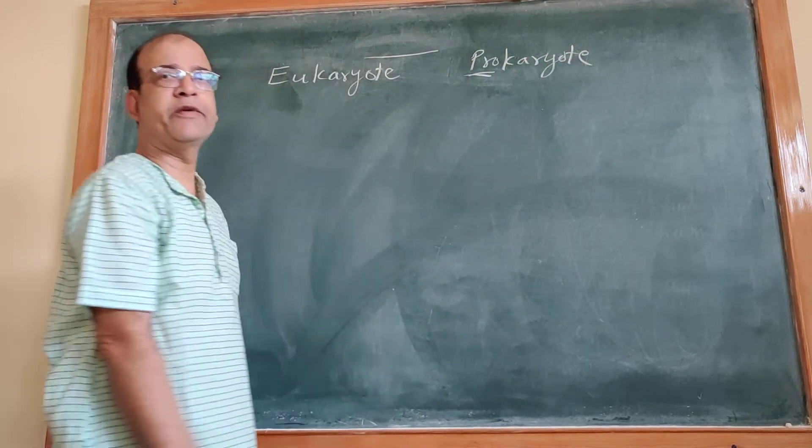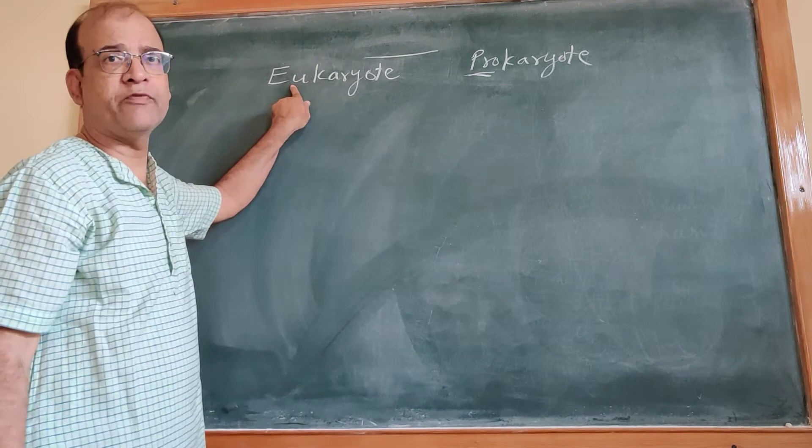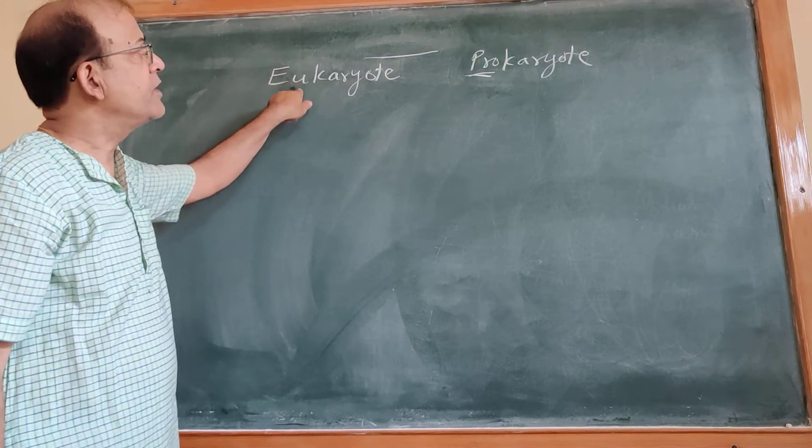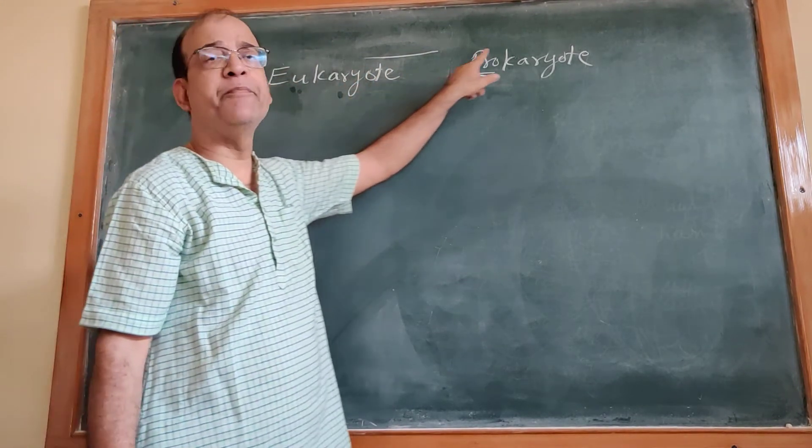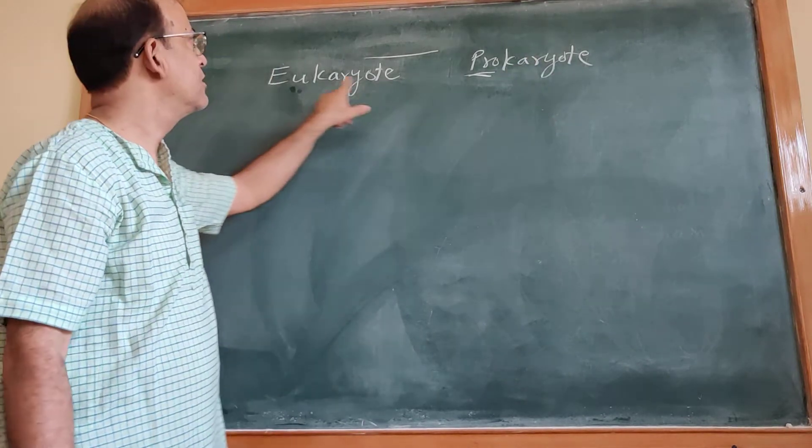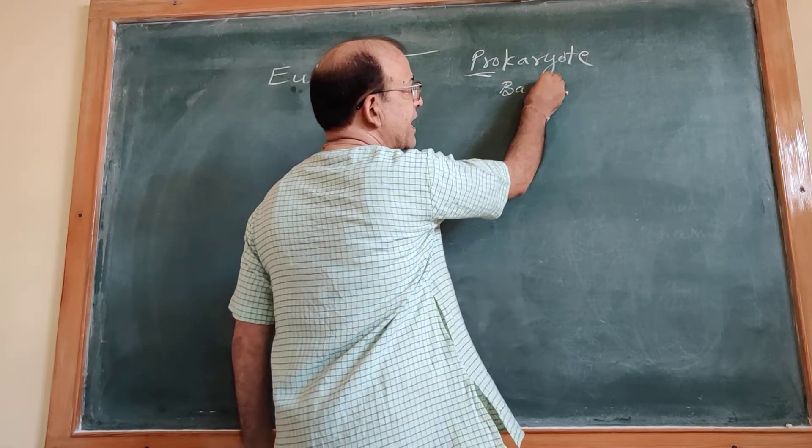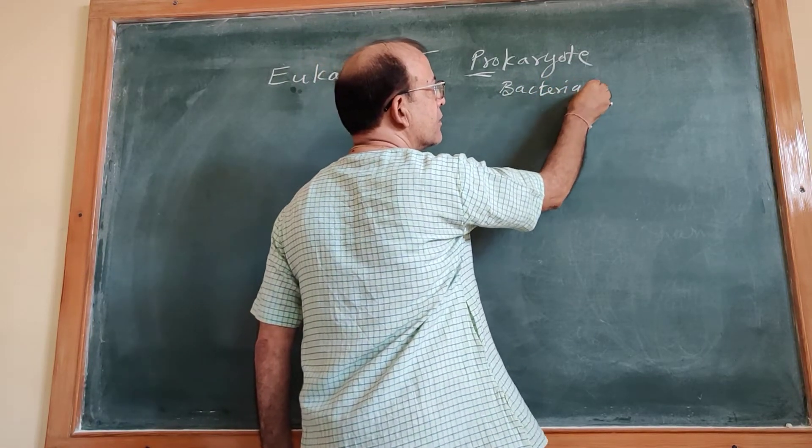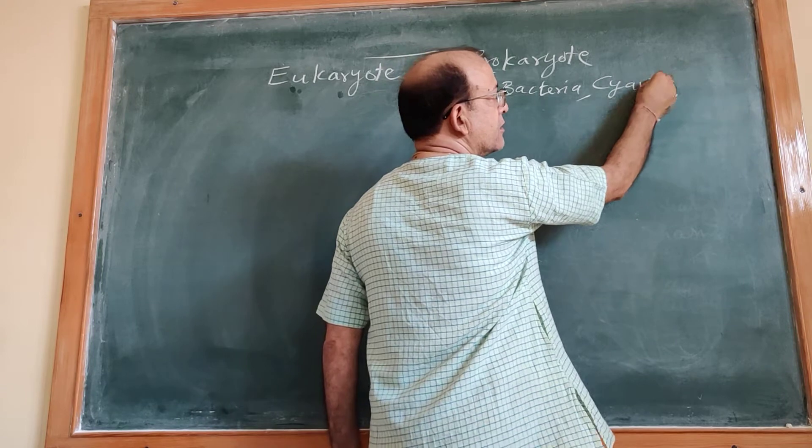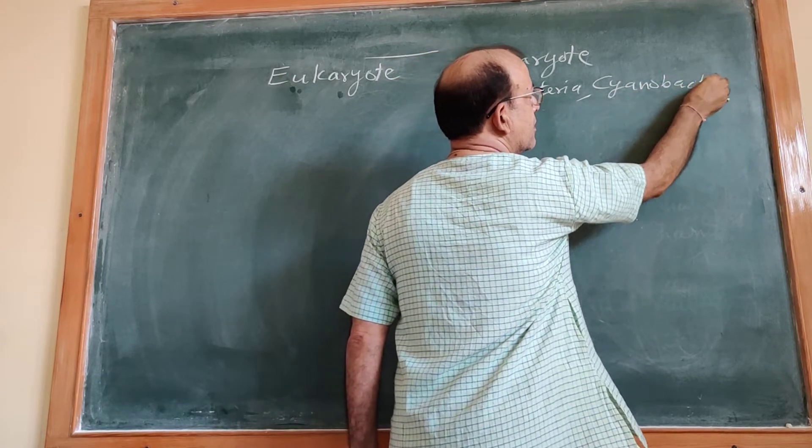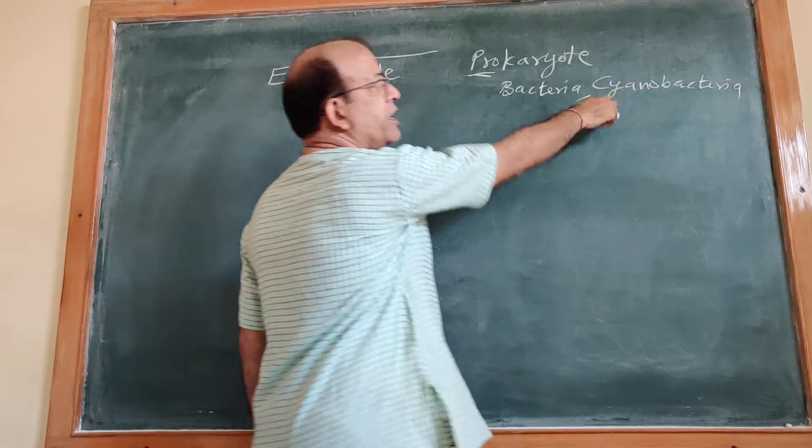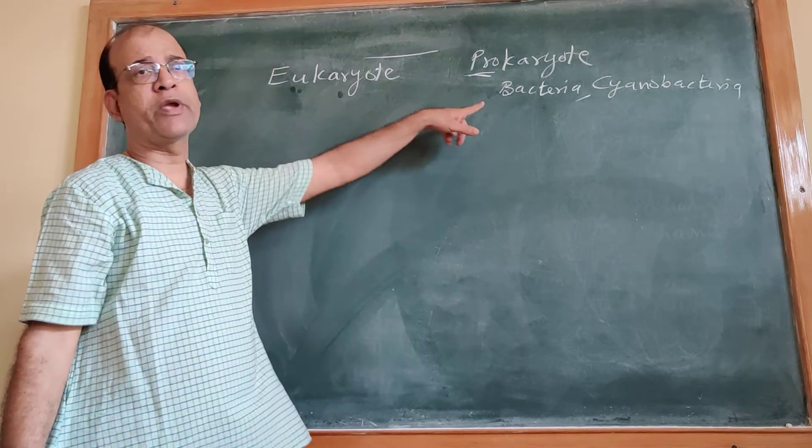Pro means primitive, u means advanced. So advanced type of cells and primitive type of cells. Primitive type of cells are bacteria and cyanobacteria. Bacteria, cyanobacteria are prokaryote.